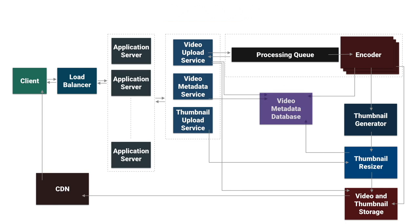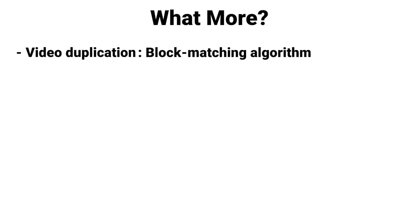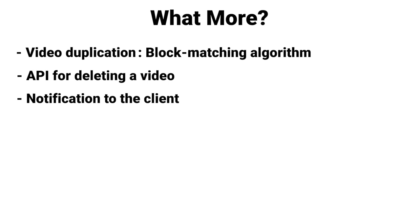Finally, we put our content — video and thumbnail — on CDN. Now let's discuss what more we can do. We can detect video duplication: if a user uploads the same video again, we can use the block matching algorithm. We can also add an API for deleting a video, and add a feature to send a notification to the client when everything is done — encoding, thumbnail generation, resizing, and storing.